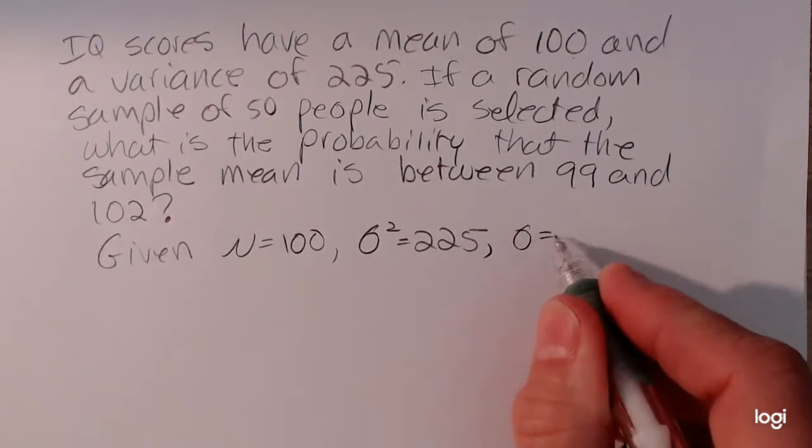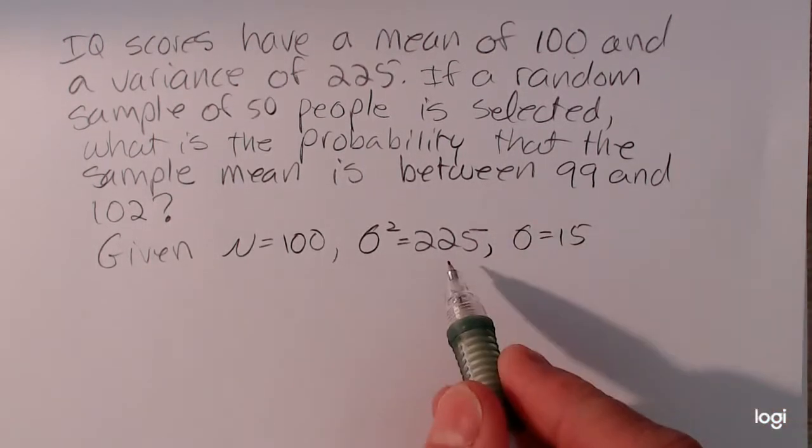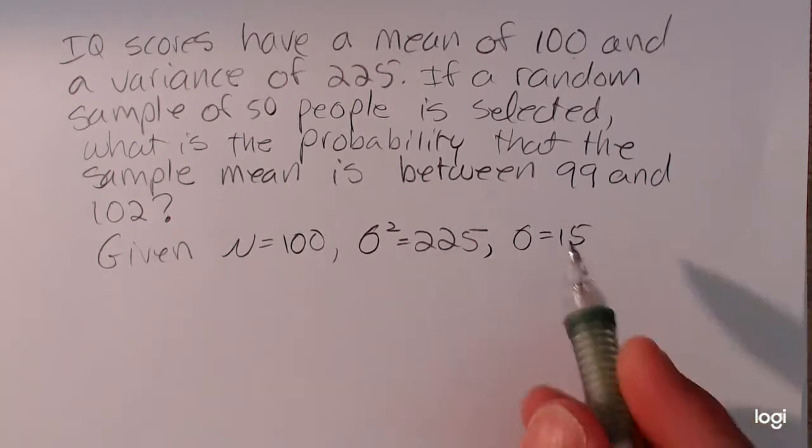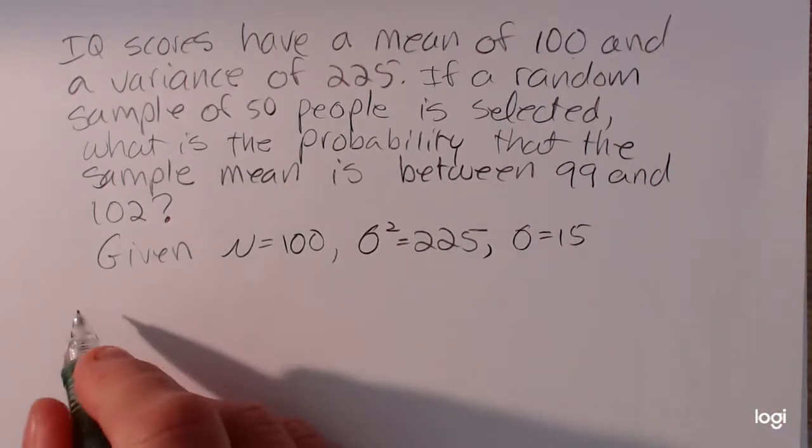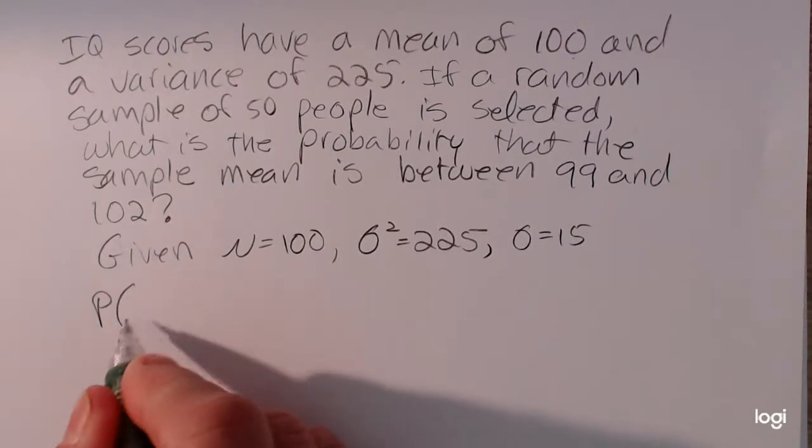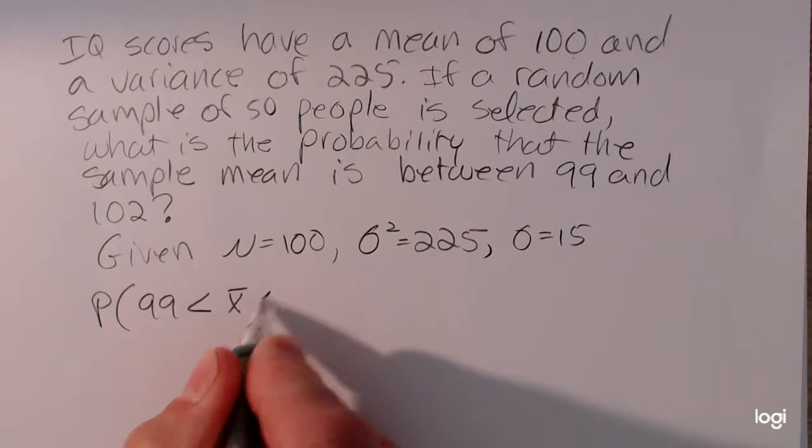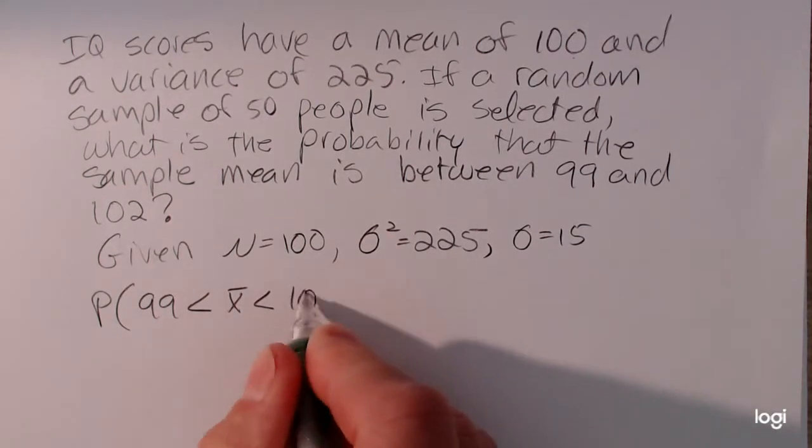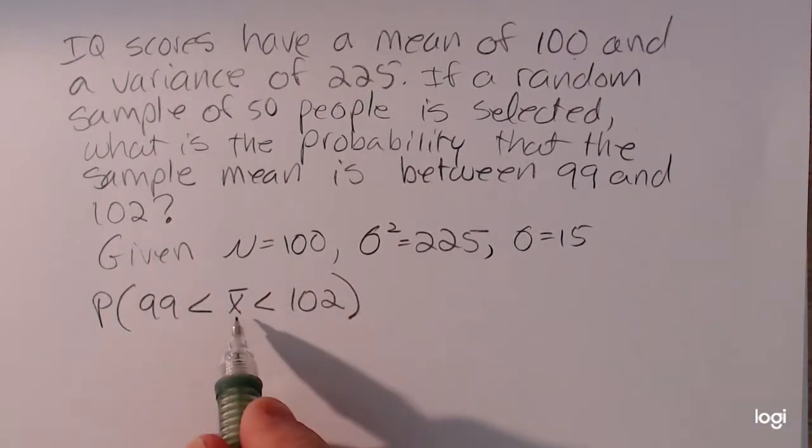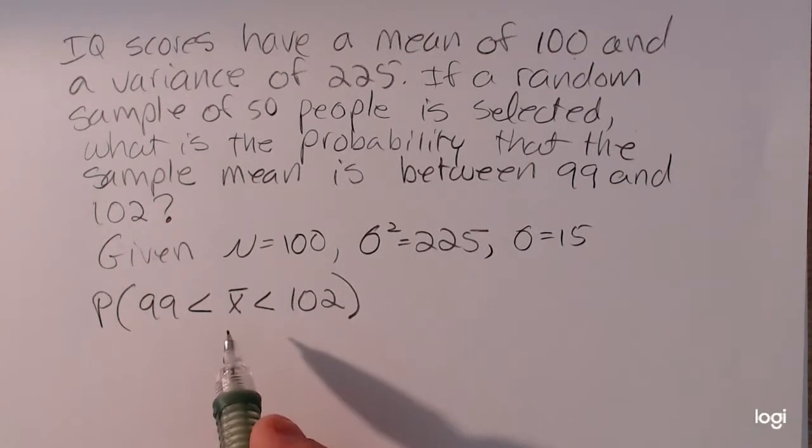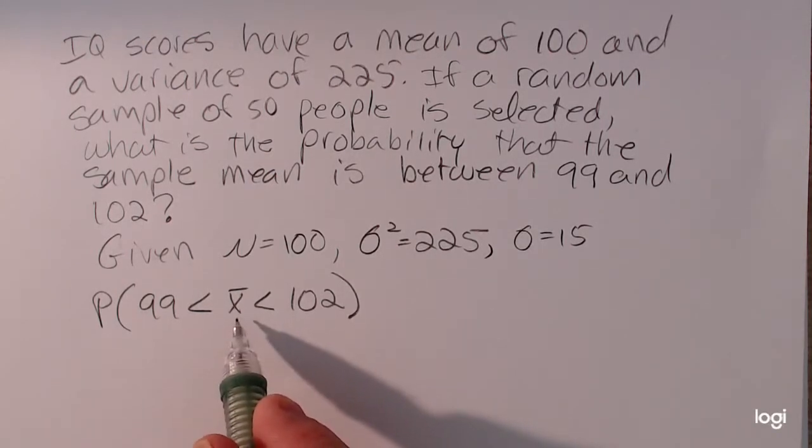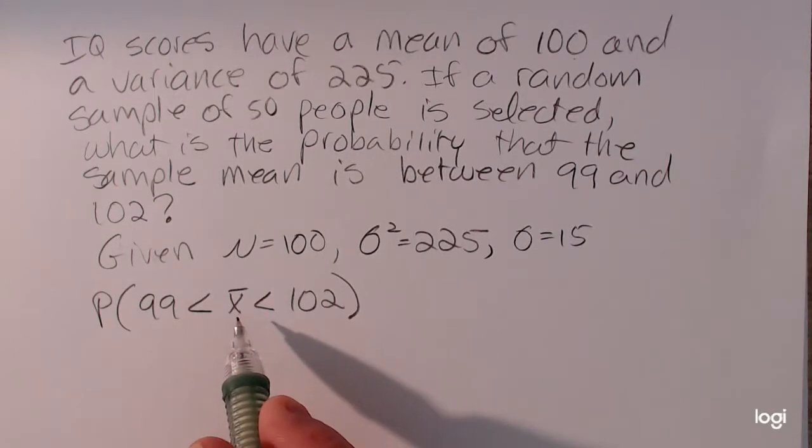So sigma will be equal to 15 because the square root of 225 is 15. In probability notation, we're finding the probability that X bar falls between 99 and 102. So I'm not putting X here where X would represent an individual IQ score. I'm putting X bar, the sample mean based on a sample size of 50.